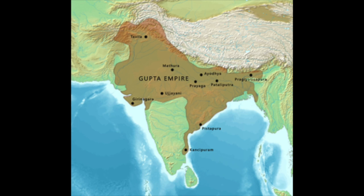Despite the Gupta Empire's successes, it did not last forever. The nation collapsed in 550 AD at the hands of the Huns or a related group. From there on, the Indian subcontinent would remain fractured for several centuries.